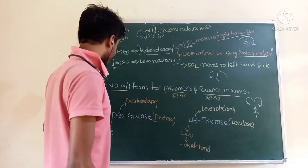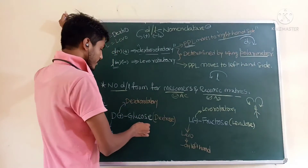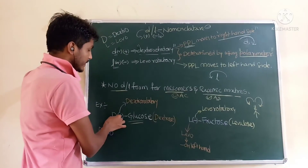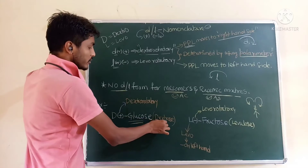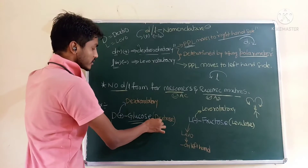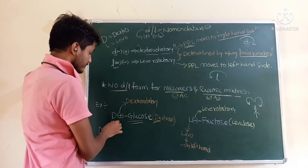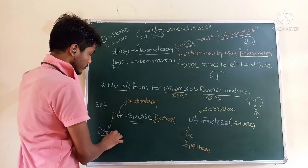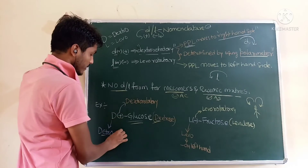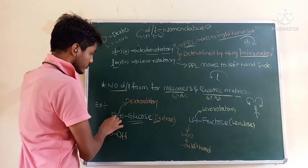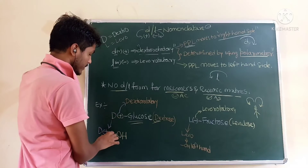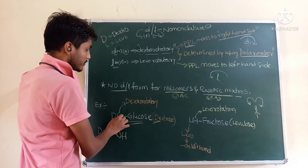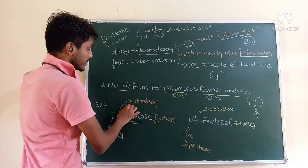For example, consider beta-D-glucose, also called dextrose. In dextrose, the OH group is on the right hand side. Capital D means OH is on the right hand side — this is dextrose. The d symbol indicates that this compound will rotate plane polarized light to the right side.